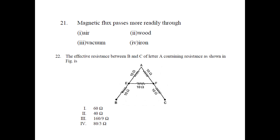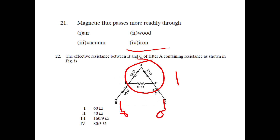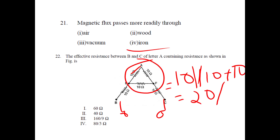Magnetic flux passes more readily through certain materials. For the effective resistance between B and C of a triangle circuit: we calculate R effective. With 10 ohm resistors in a triangle configuration, two paths are in parallel. Solving: 20 parallel with 20 gives 10, and we get the result 20 by 3 ohm.